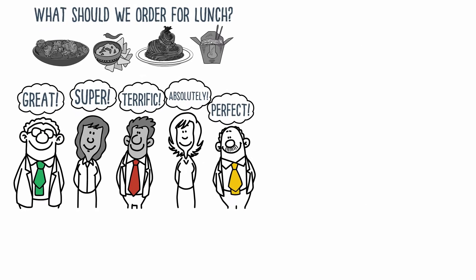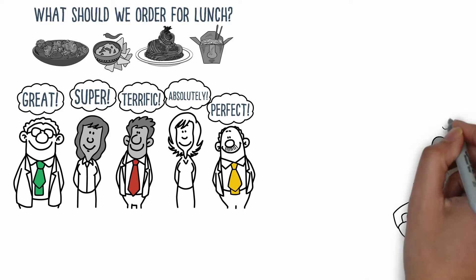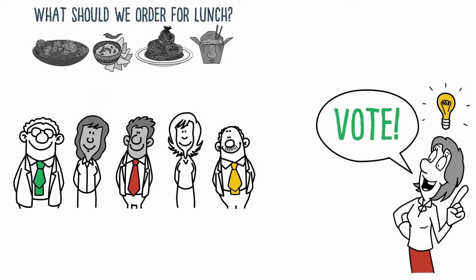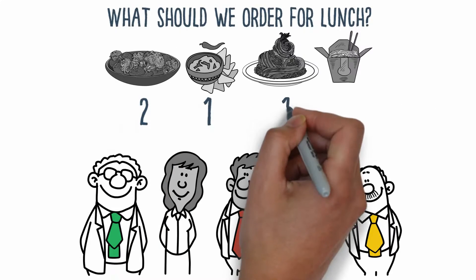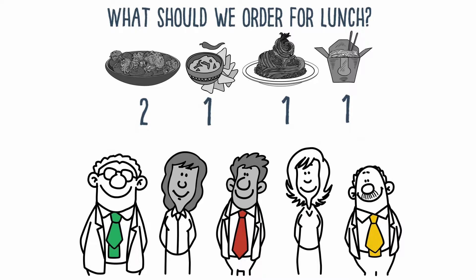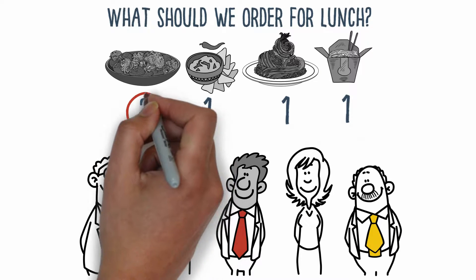You might think, oh, that's easy, let's take a vote. Great. Let's say two people voted Indian and the others were split. One vote each for Chinese, Mexican and Italian. The winner is clear. Indian food with the most votes.